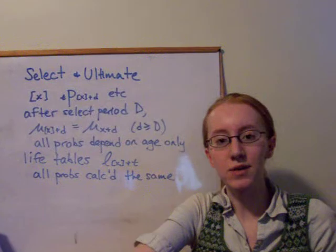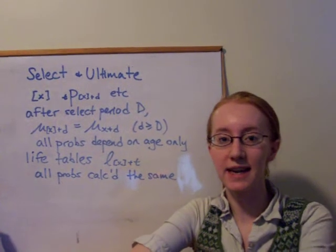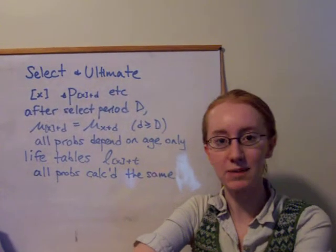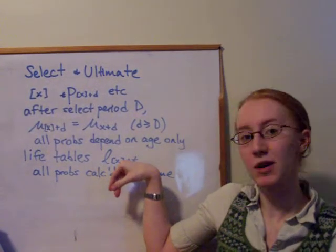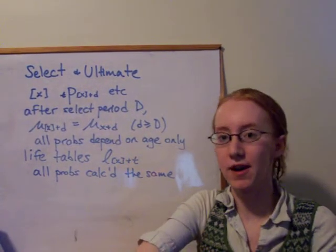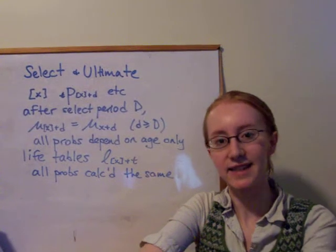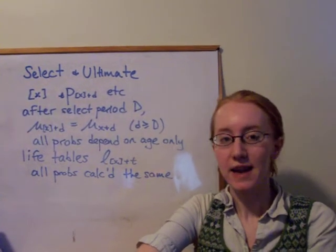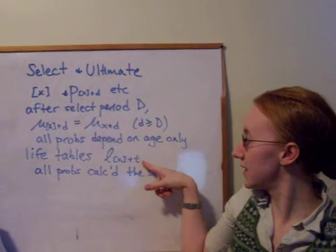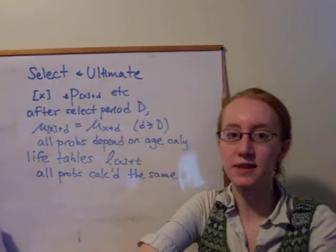In order to actually use this information, we display it in a life table, similar to what we did before when we weren't worrying about select and ultimate, and we just have L x in square brackets plus t for all values of t and x. But again, since we have this select period, if we have the case where little t here is bigger than or equal to capital D,